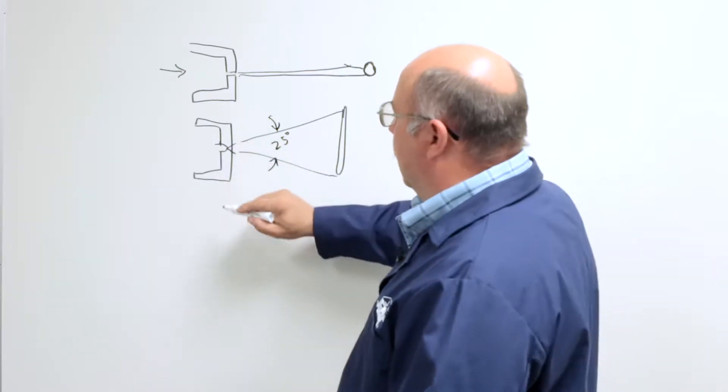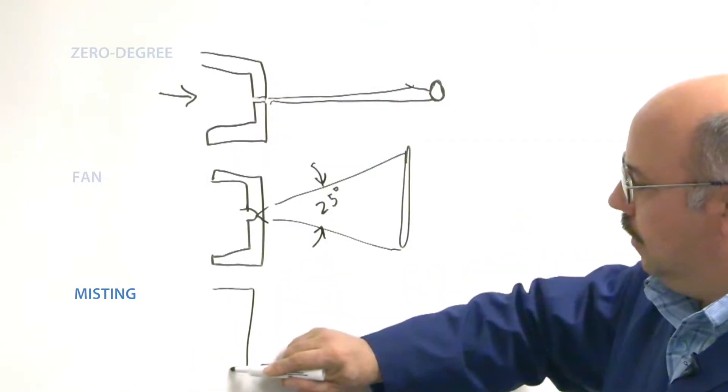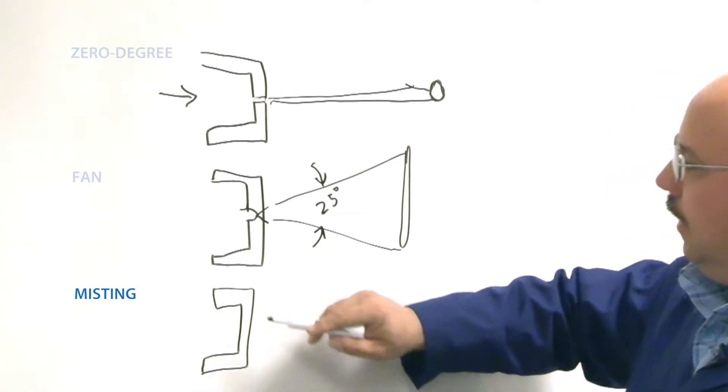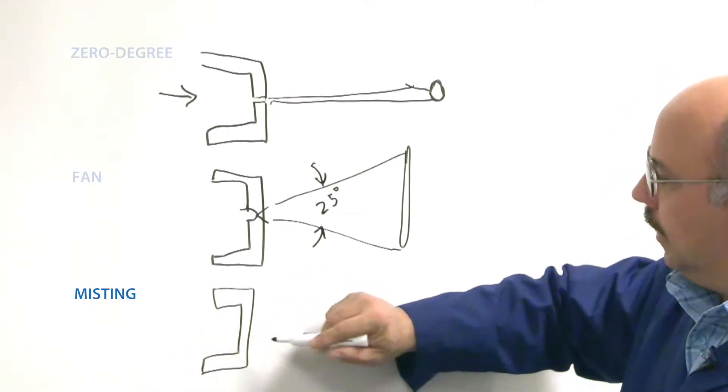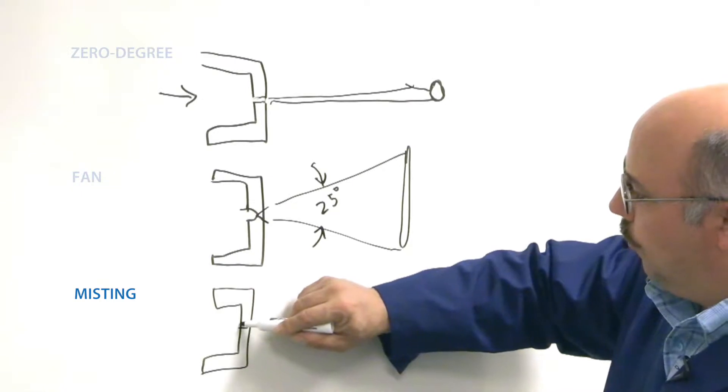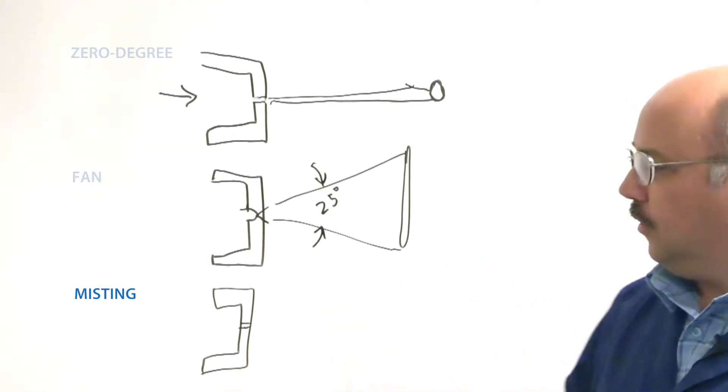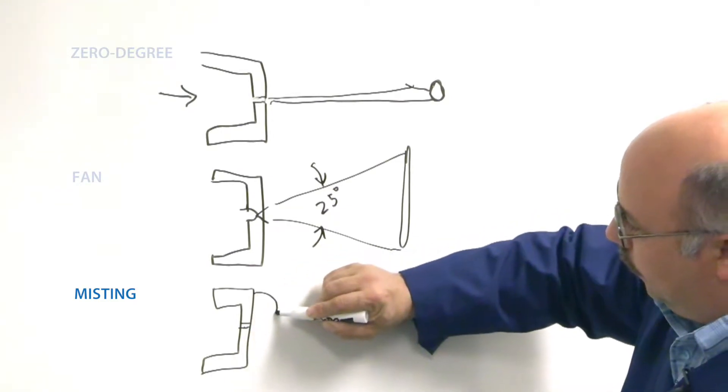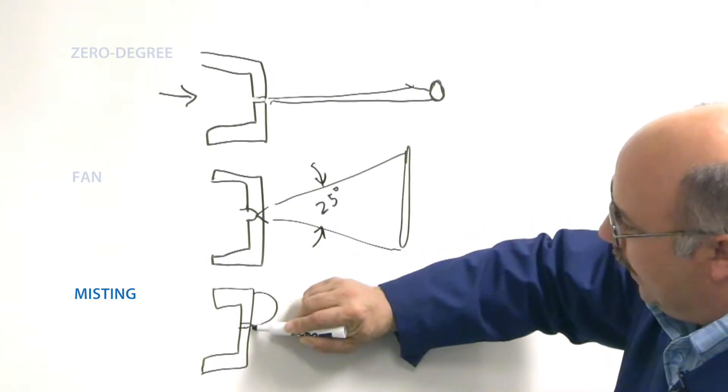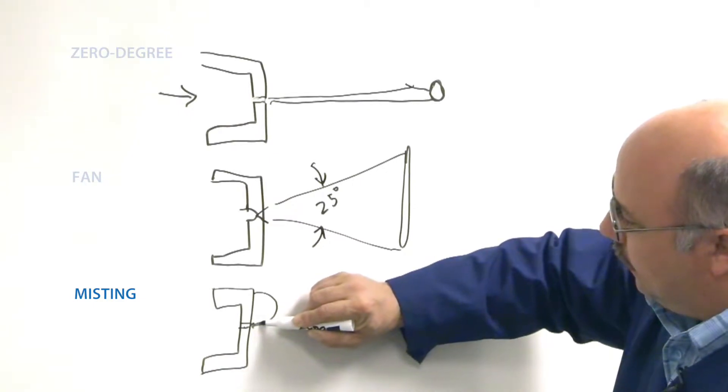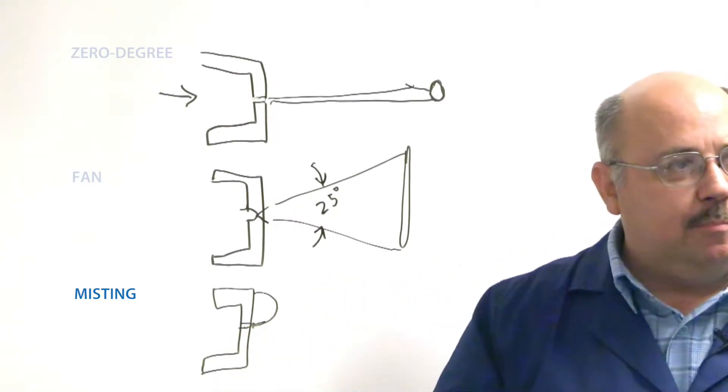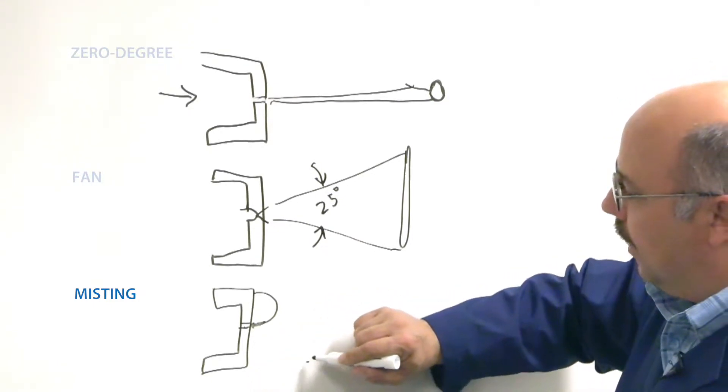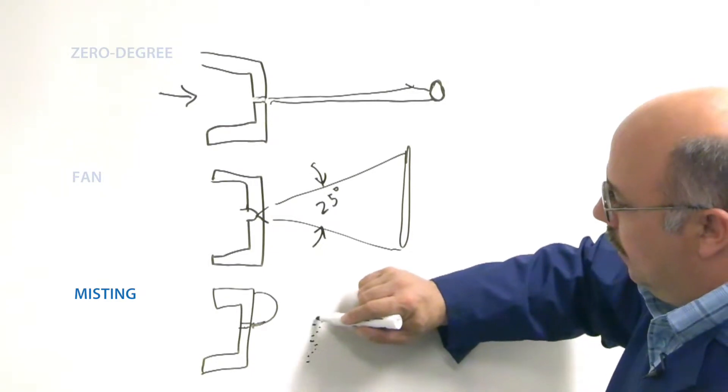Then the third type of nozzle is a misting nozzle, or sometimes referred to as an impingement nozzle. It starts with the same inner shape with the fluid coming in. It has a straight hole through it, and usually these are very small in nature. But then there's a small rod that's welded and attached, and the water that comes through hits that immediately upon exiting the nozzle, and it disperses the water into many thousands of tiny droplets.